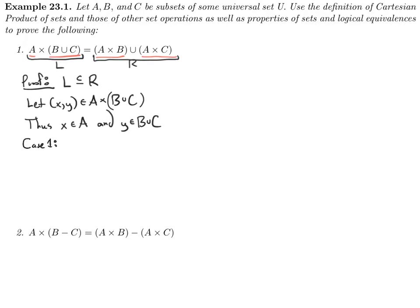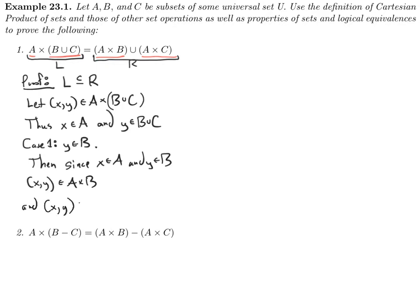So let's do those two cases. Case one: Y is an element of B. In that case, since X is an element of A and Y is an element of B, we have that X, Y is an element of A cross B — because that's what A cross B is, all ordered pairs where the first element is from A and the second from B. And now that X, Y is an element of A cross B, it's an element of A cross B union A cross C.